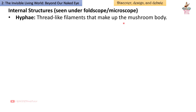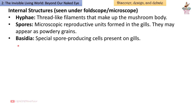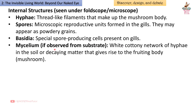Internal structures seen under the microscope: Hyphae — thread-like filaments that make up the mushroom body. Spores — microscopic reproductive units formed in the gills, appearing as powdery grains. Basidia — special spore-producing cells present on gills. Mycelium — if observed from substrate, a white cottony network of hyphae in the soil or decaying matter.